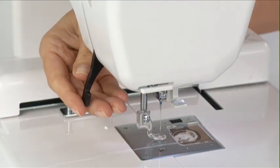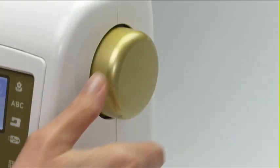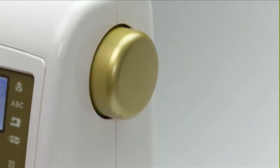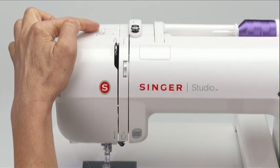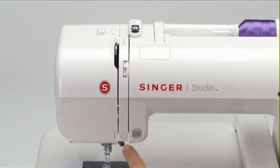Raise the presser foot lifter before you start to thread the top of the machine. Now turn the handwheel toward you to bring the needle to its highest position. Each part of the threading sequence is marked by a number indicating its order in the threading sequence.